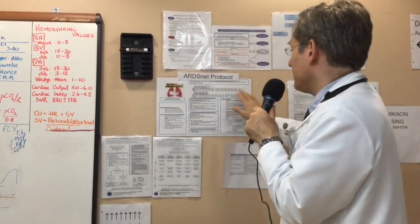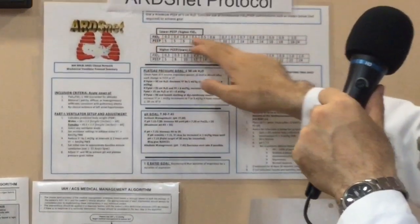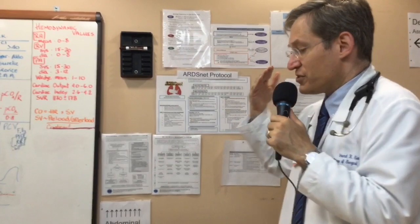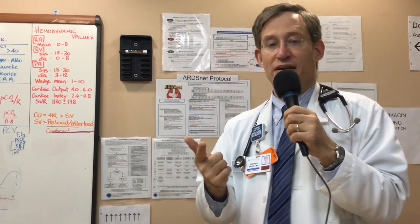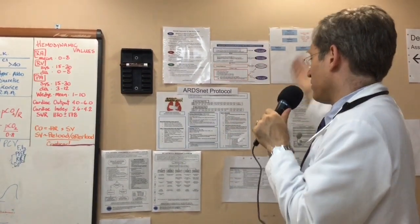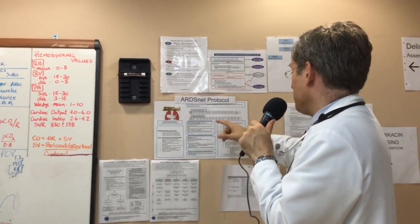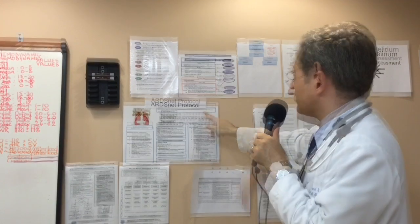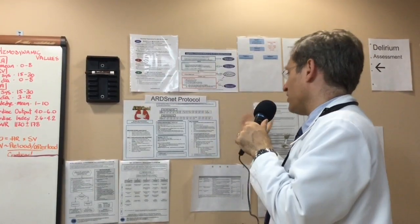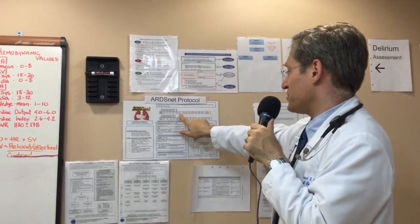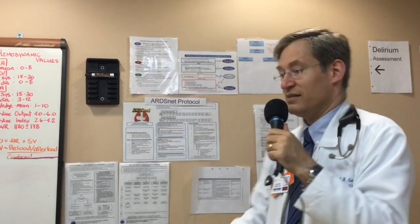The FiO2/PEEP ladder is important. In this unit we typically use the lower PEEP, higher FiO2 combination, where your targets are a PaO2 of 55 to 80 and an O2 saturation of 88 to 95%. What I see all the time that you should not be doing is having a patient on 100% oxygen with a PEEP of only 5 — that's simply wrong. If you're at 100% FiO2, you should be at a PEEP of 18. As the patient improves, you can titrate down: 70% with PEEP of 10, then 60%, then 50% with PEEP of 10, then 50% with PEEP of 8, and so on.